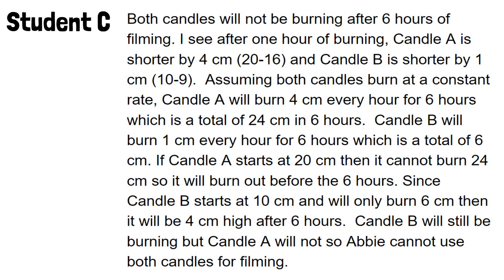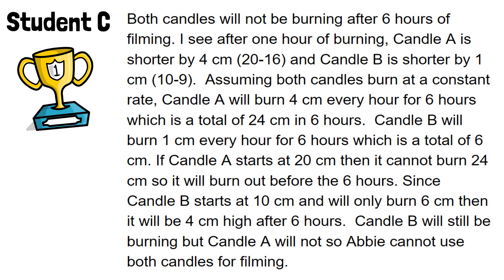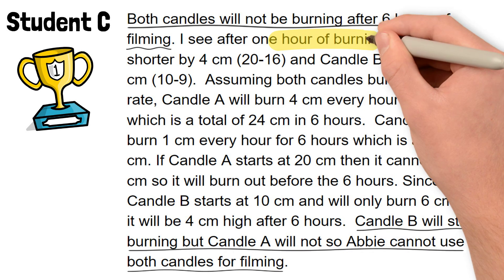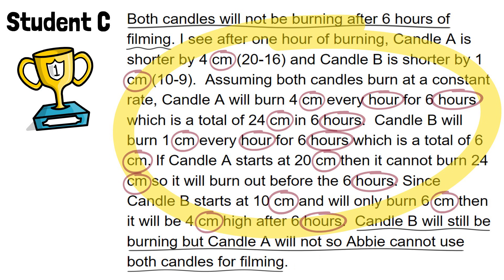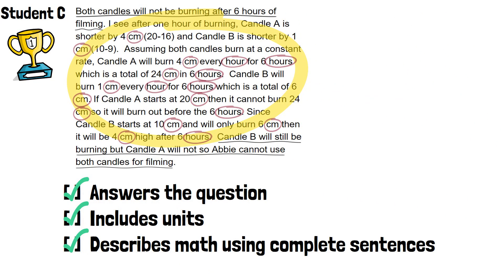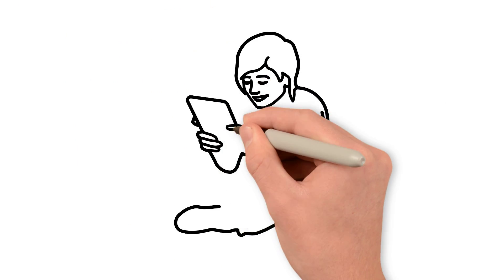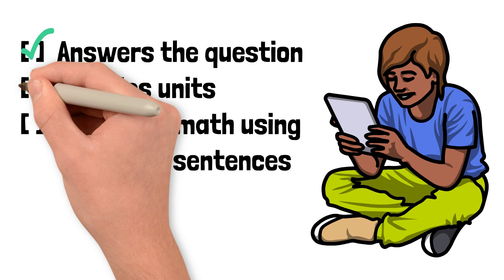So finally, let's look at student C's response, and I'm going to give you a little bit more time to read it, maybe about 30 seconds. Now, this response includes all three success criteria. They clearly answered the question — twice in fact. They described their mathematical process in detail using complete sentences, and using units of measure. It's a longer explanation for sure, but because it includes all three success criteria, it will receive full credit. So now, take one more look at your written explanation. Is there anything that you could add or change to improve it, and to make sure that it includes all three success criteria?